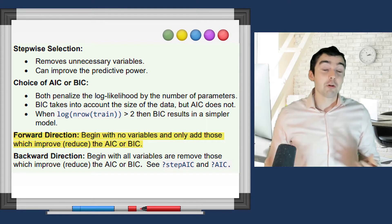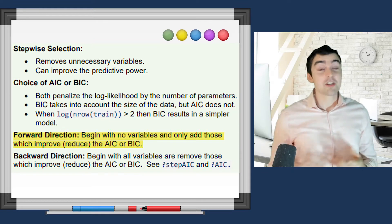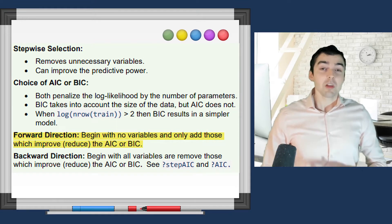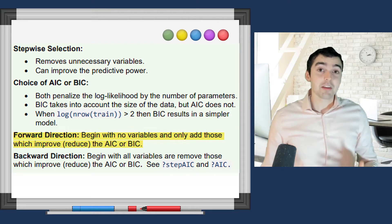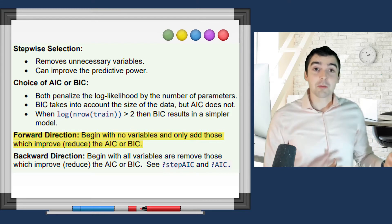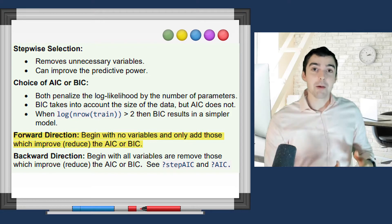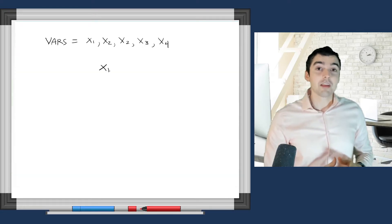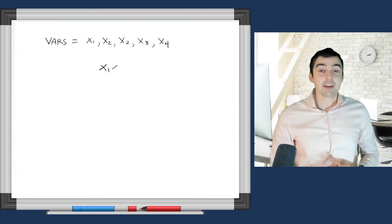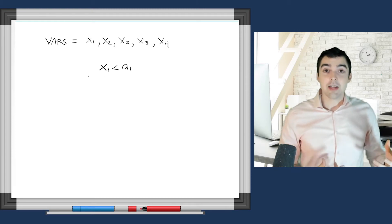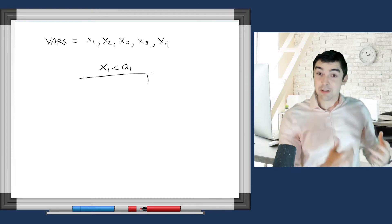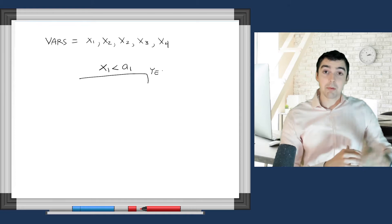This begins by the decision tree algorithm. This is a forward stagewise machine learning algorithm. You remember from GLMs that forward selection starts with no variables and then continues to add them. Decision trees work in the same way. They first select a single variable and then continually make the tree more complex.